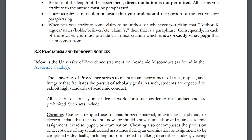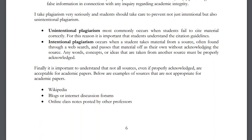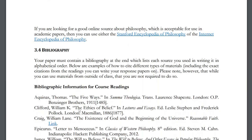Regarding plagiarism: I look for it, I take it seriously, and any plagiarized assignment receives a zero. On sources: if you use additional sources beyond the reading, they must be peer-reviewed academic sources. Wikipedia, blogs, and online notes from other professors don't qualify. Two recommended resources are the Stanford Encyclopedia of Philosophy and the Internet Encyclopedia of Philosophy — the latter is aimed more at beginners. Both are peer-reviewed and a great place to start.